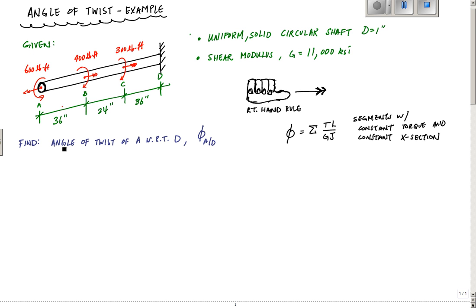We want to find the angle of twist of A with respect to D. We use the symbol phi for angle of twist. The equation we're going to use is phi equals T of X over J of X times G, this is probably how it was derived to you.